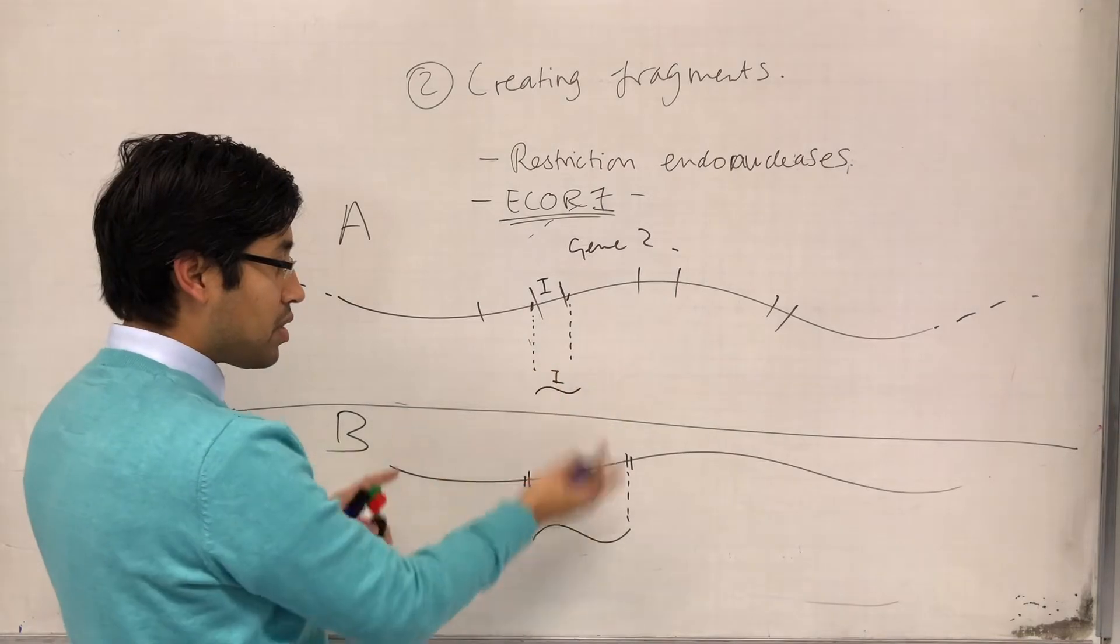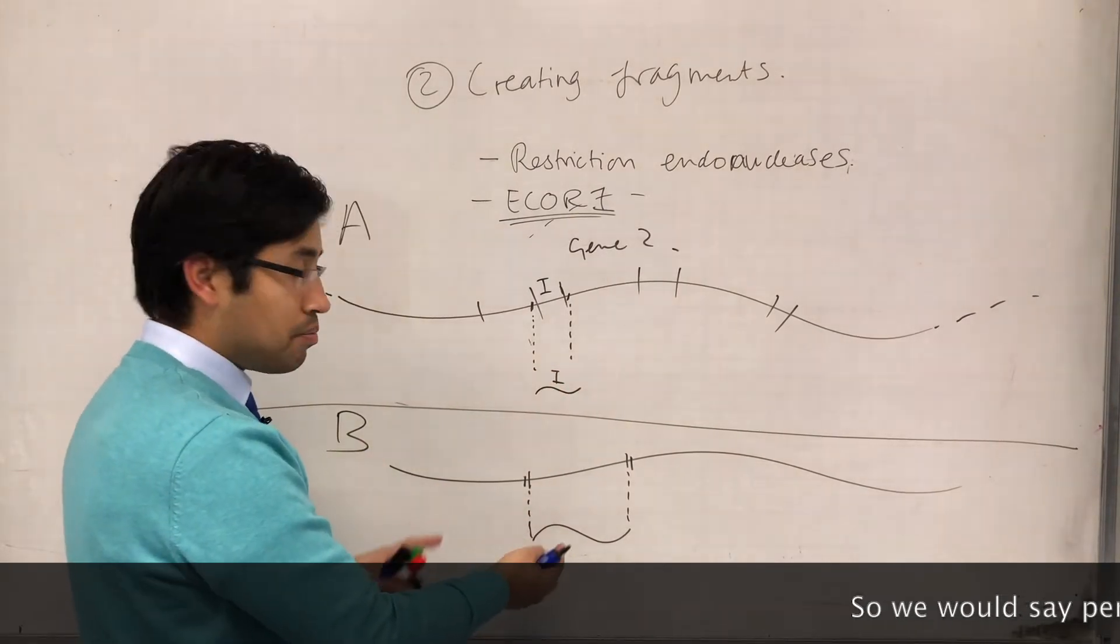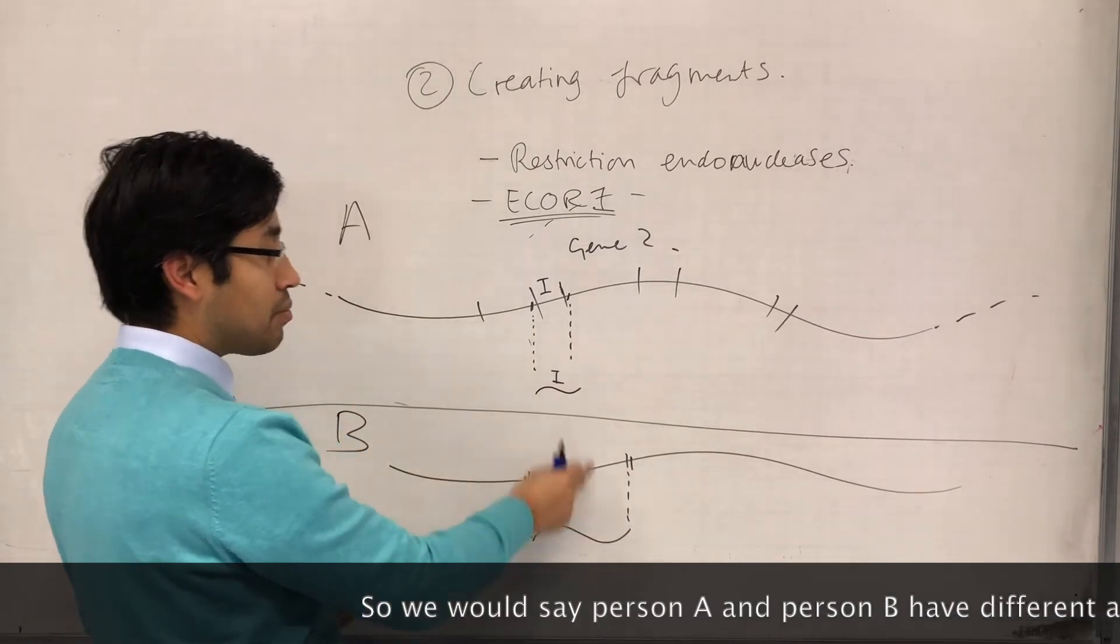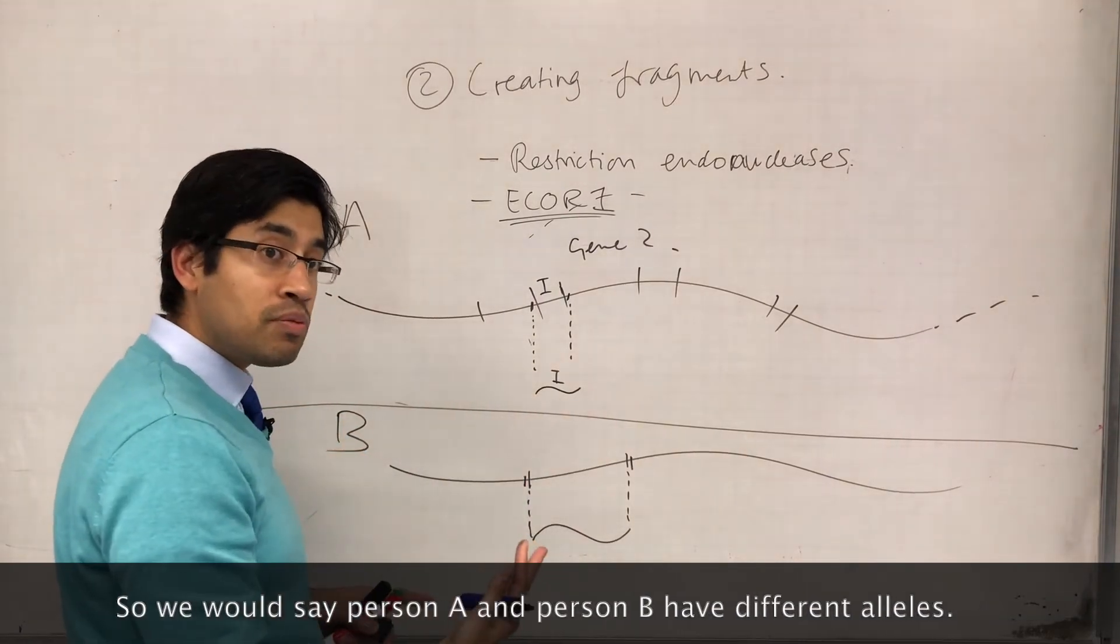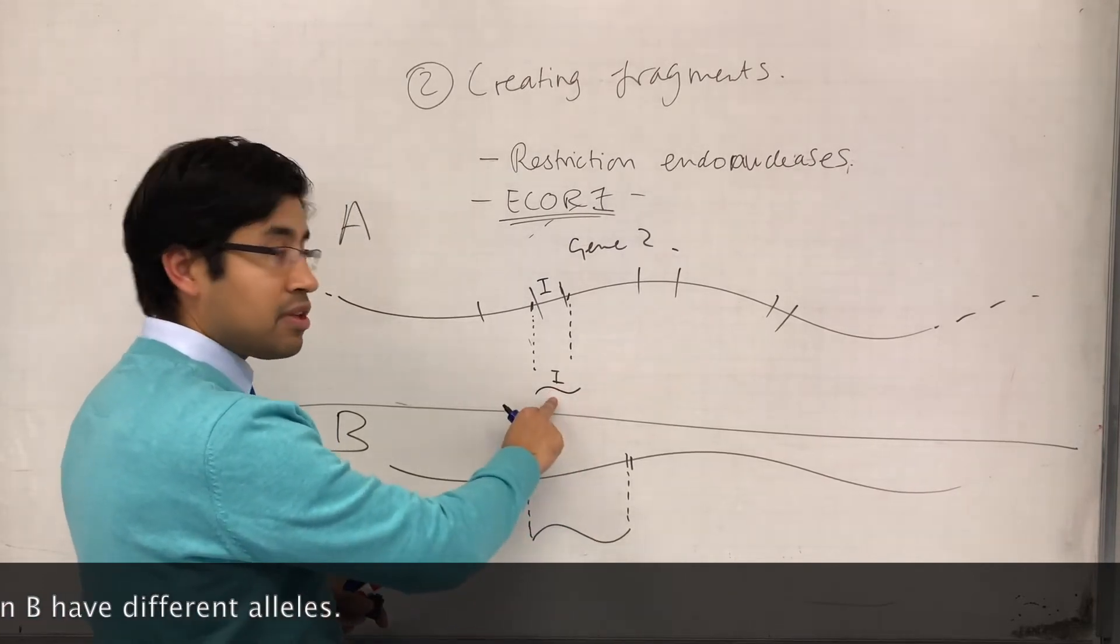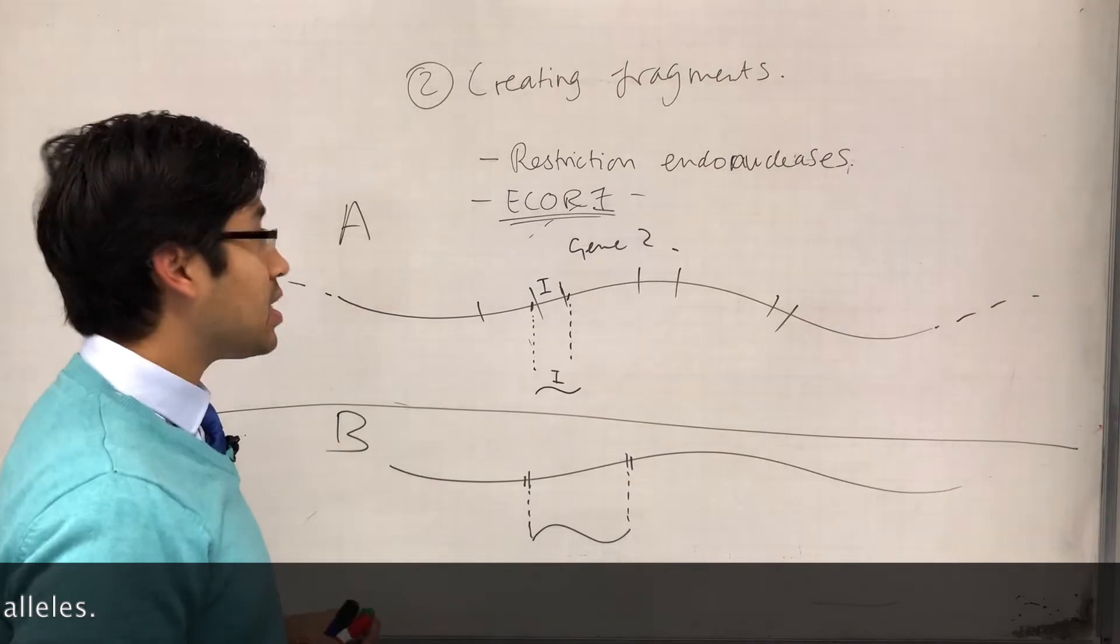So can you see how their fragment sizes are different? Because we've cut out that intron, this person happens to have a longer fragment than this person, so we assume this person has got more STR repeats than this person in this particular gene.